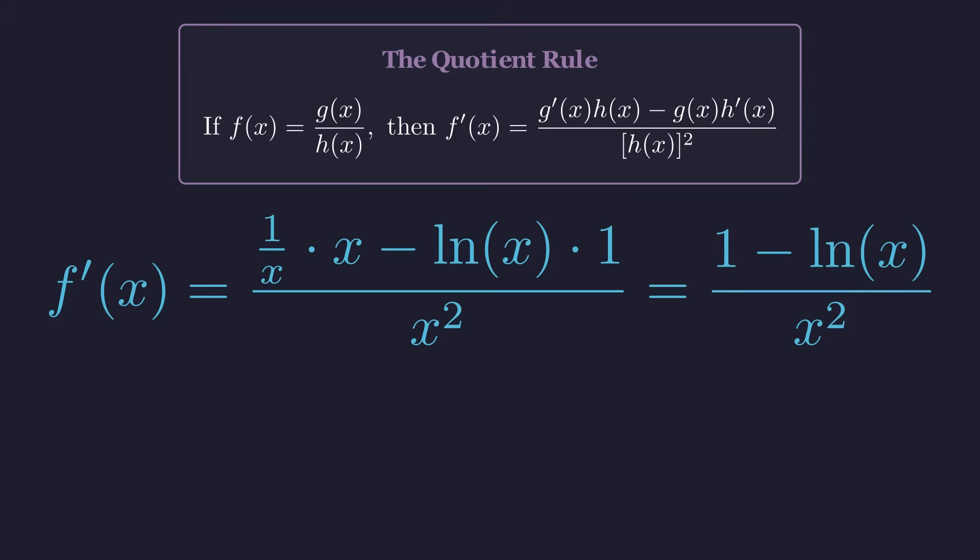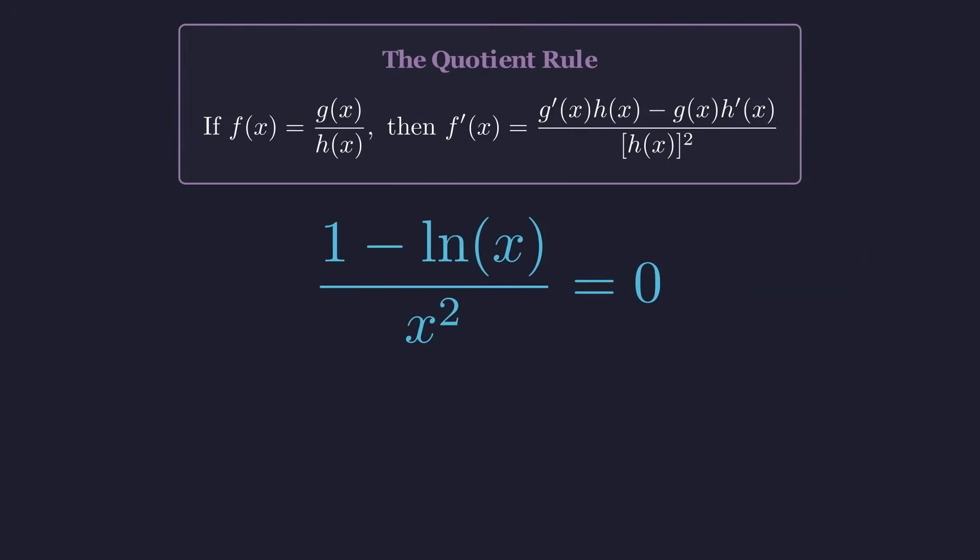Now, to find where this function might have a maximum or minimum, we set the derivative equal to 0. Setting this equal to 0. For a fraction to equal 0, its numerator must be 0. So we need the natural log of x to equal 1. And the only number whose natural logarithm is 1 is e. So e is where our function has a critical point.